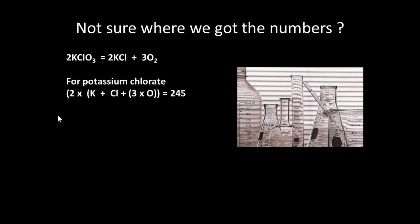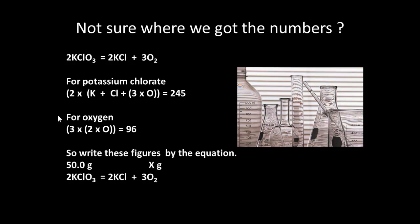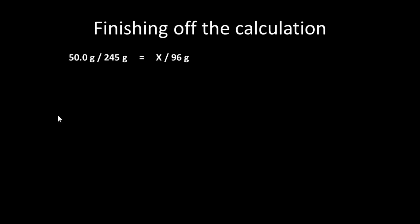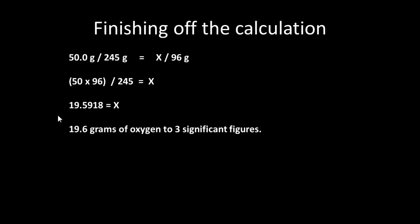Where do those numbers come from for potassium chlorate? We add up the atomic masses. For oxygen, we take the atomic masses and write these figures into the equation. We set up our proportions to solve for x: 50 over 245 equals x over 96. So x is 50 times 96 divided by 245, which gives 19.6 grams of oxygen to three significant figures.